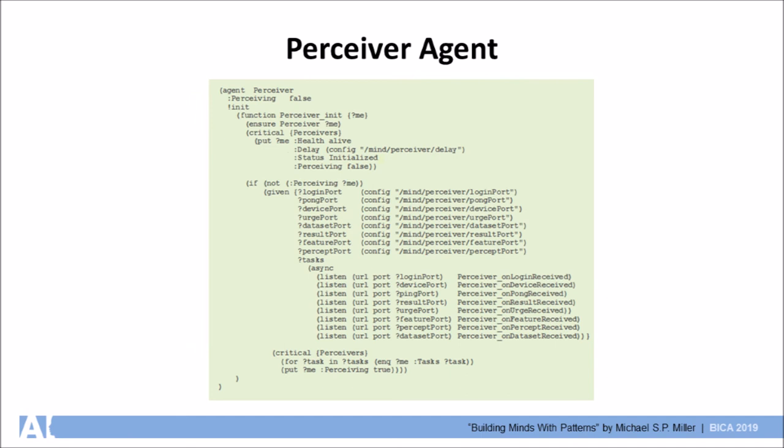The perceiver agent initializes itself by creating listeners on various ports giving them specific message handlers.